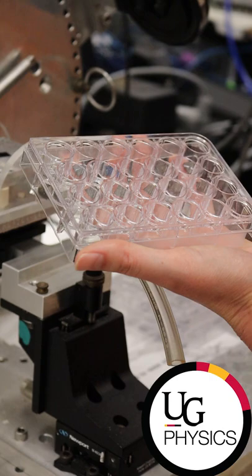Okay, so ellipsometry is a technique that we use a lot in this lab to look at properties of our thin films, specifically thin polymer films that we're studying.